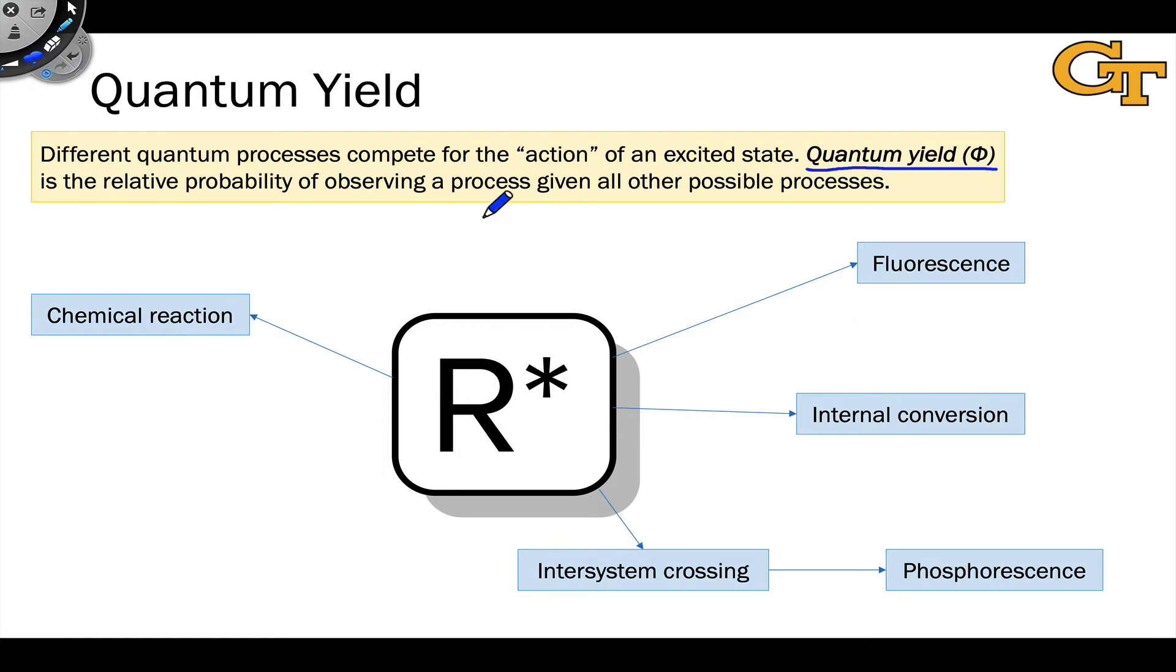To understand quantum yield, let's talk about a hypothetical process. Let's say we started with a molecule R in its ground state, and R absorbed a photon h nu to form an excited state R star. Let's say this happened in a solution where another molecule M that can react with the excited state R star is also present.